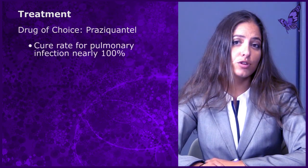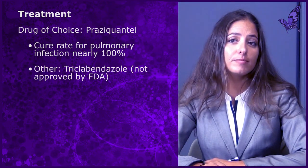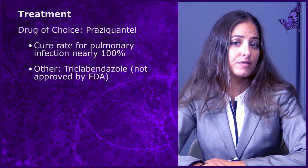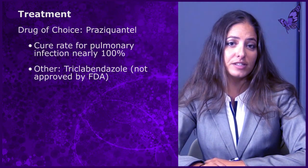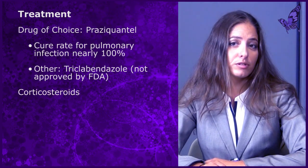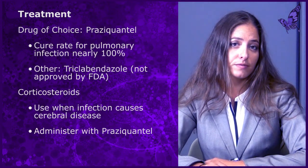Treatment of lung flukes is typically a short course of praziquantel, with cure rates of nearly 100 percent. In some countries, triclabendazole may be used instead; however, this option is not currently approved by the FDA for this indication in the United States. For cerebral infection, corticosteroids may be administered in addition to praziquantel.